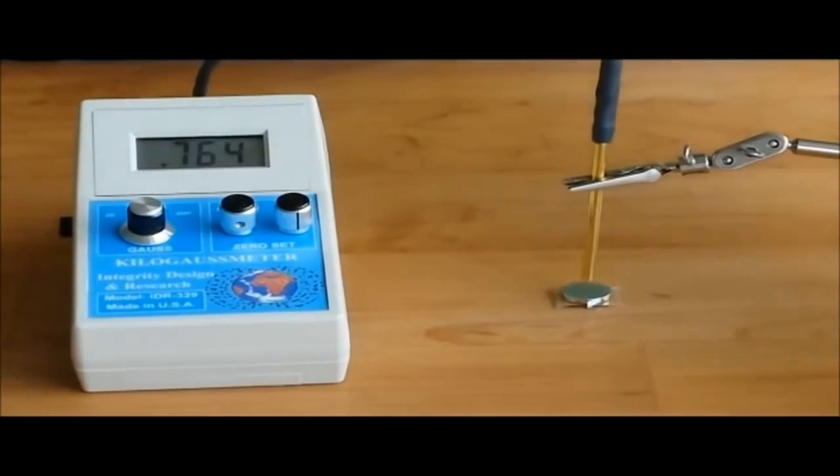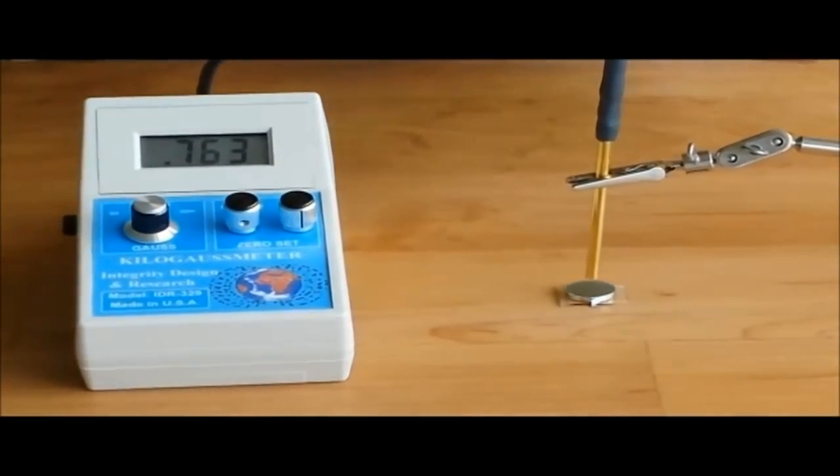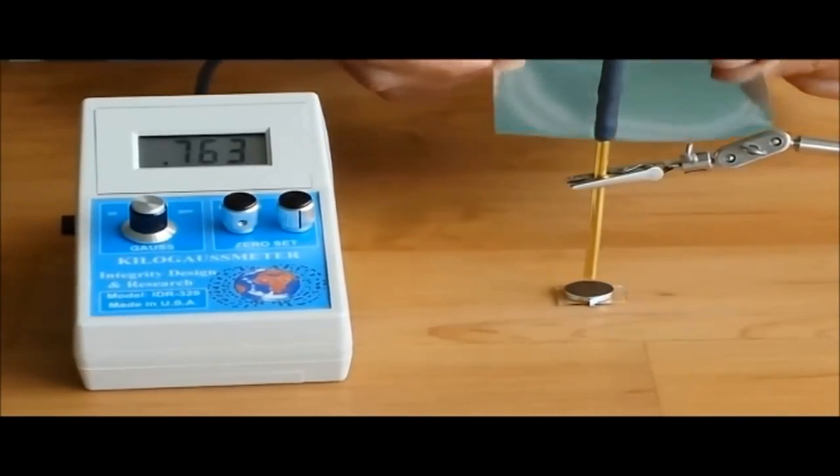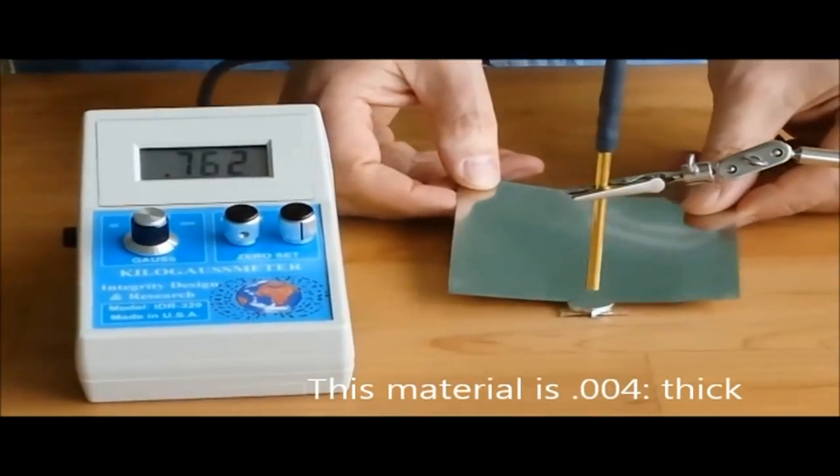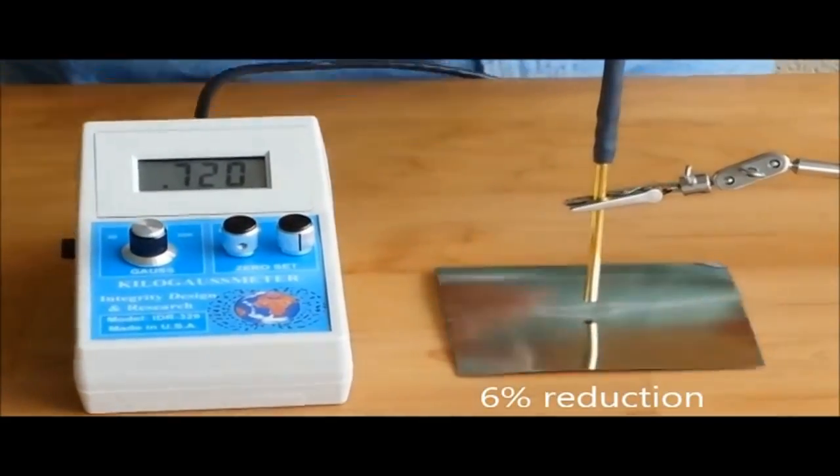Finally, I'd like to show you the effect of mu metal. Mu metal has a very high permeability, but a fairly low saturation level, which means it's not appropriate for shielding strong magnetic fields. When I set one layer in, you see a small reduction to 720.